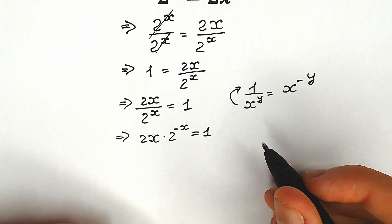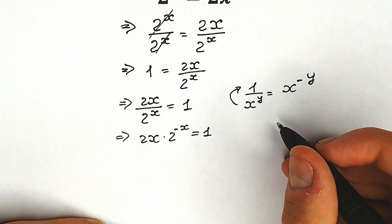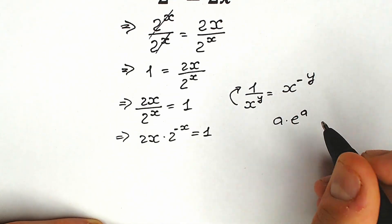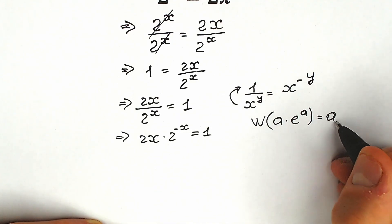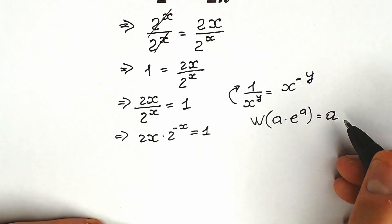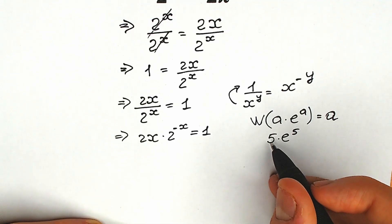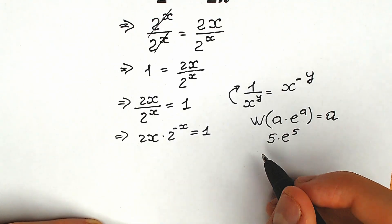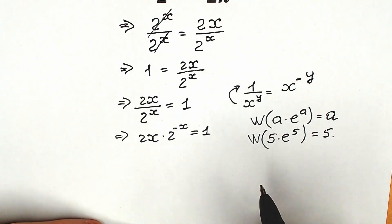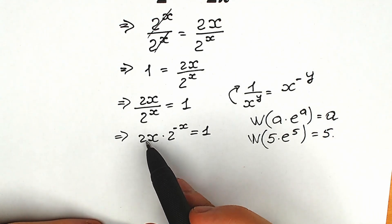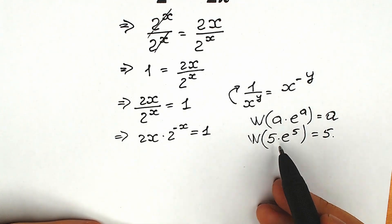The next step is to create the right expression for applying the Lambert W function. The Lambert W function works like this: when we have an expression like a times e to the power a, and we apply Lambert W, as a result we get only our a. For example, with 5 times e to the power 5, we have the same 5 as the base term and as the power, so when we apply Lambert W function we get only a, where a equals 5.